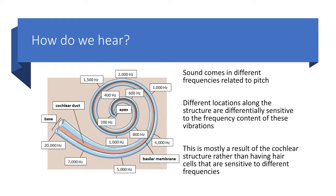There are differences in hearing due to differences in the anatomical structure of the ear — both sex-based and age-based differences. Sounds come in different frequencies related to pitch. Consequently, different locations along the basilar membrane are differentially sensitive to the frequency content of vibrations, due to specialized hair cells which are sensitive to different frequencies.